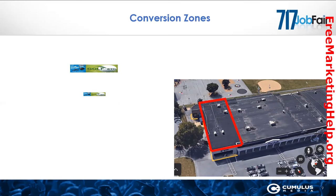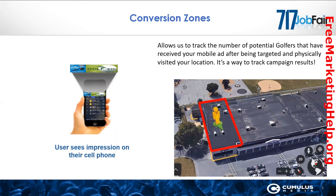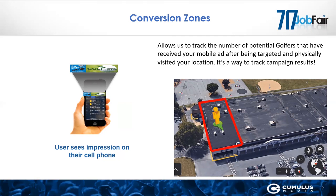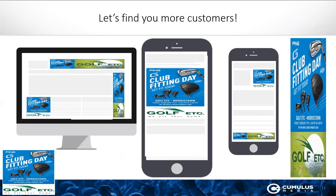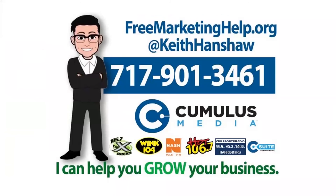We take your building and draw an invisible fence around it, but we don't call that a geofence — that's a conversion zone. A conversion zone allows us to track the number of potential golfers that have received your mobile ad after being targeted and physically visited your location. It's really a way for you to track the results of your campaign and hold our feet to the fire and say, is this really effective? Am I really getting customers from this? We can find more customers on the websites they're already visiting, in the news feeds they're looking at on their phones — wherever they're going online, we can follow them and remind them about your offering.